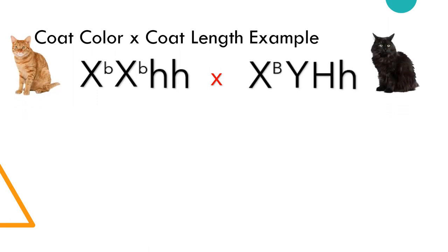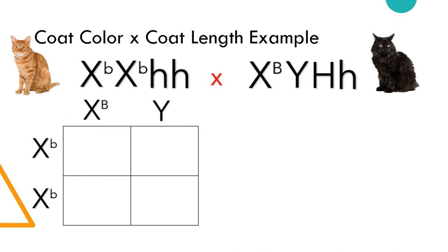First, let's consider coat color. A Punnett square shows one-half yellow males and one-half tortoiseshell females.